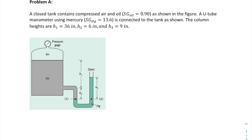The column heights are given: height one, as you can see here, is 36 inches; height two is 6 inches; and height three is 9 inches. For this problem we will be dealing in SI units, so you have to convert the given values.